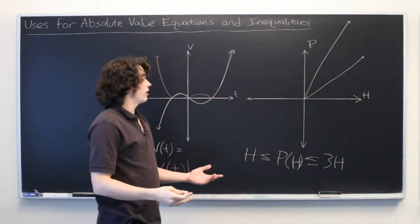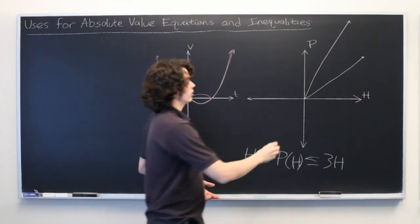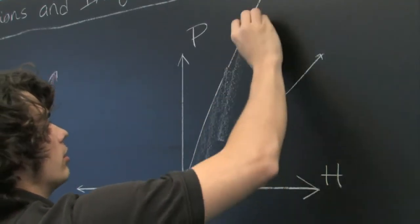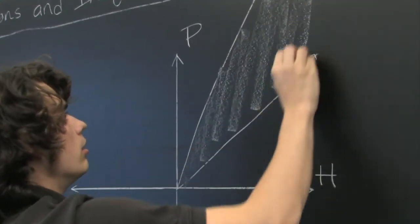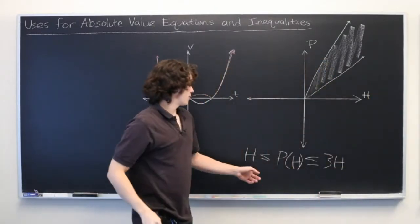And we know that all of the valid answers for how much pizza we want to order lie in between these two lines. Represented by this inequality.